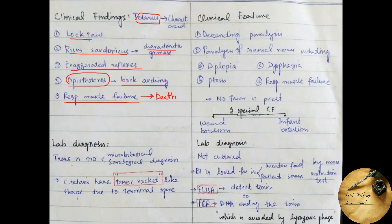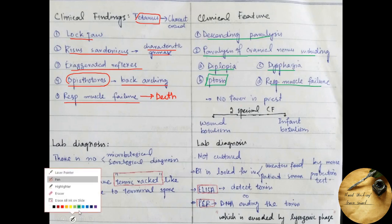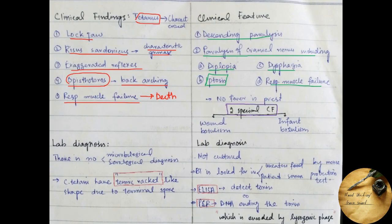Coming towards the clinical features of diseases caused by Clostridium botulinum, it causes descending paralysis, paralysis of cranial nerves including diplopia, dysphagia, ptosis, and respiratory muscle failure. It causes no fever. These are two special clinical forms of diseases caused by Clostridium botulinum: wound botulism and infant botulism.